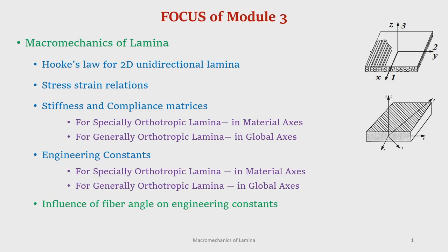In our last class we started with Hooke's law and understood how the three-dimensional generalized Hooke's law is reduced to a two-dimensional unidirectional lamina. We then developed the stiffness and compliance matrix for both spatially orthotropic and generally orthotropic lamina, and discussed the engineering constants for spatially orthotropic lamina in the material axis. Today we will discuss engineering constants for a generally orthotropic lamina and understand the influence of fiber angle on engineering constants.